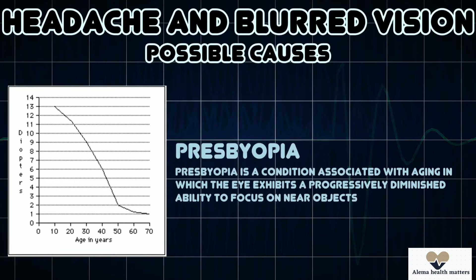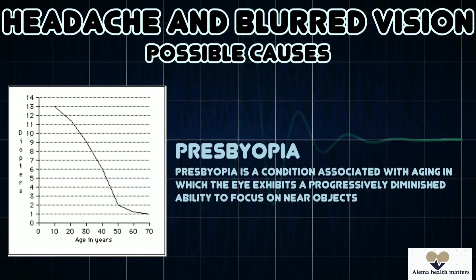Another condition that can cause headache or blurred vision is presbyopia, which is a condition associated with aging in which the eye exhibits a progressively diminished ability to focus on near objects.